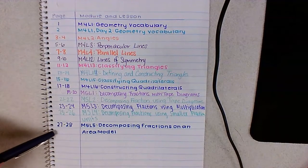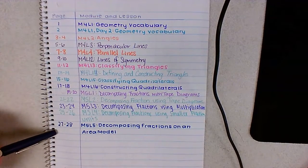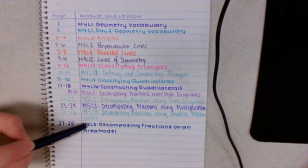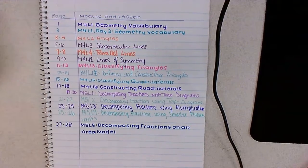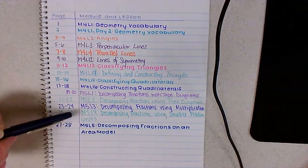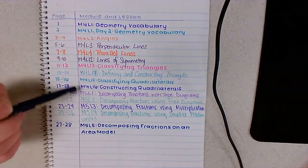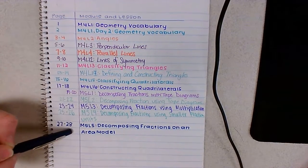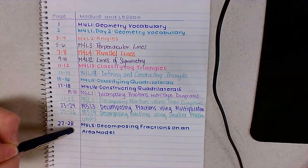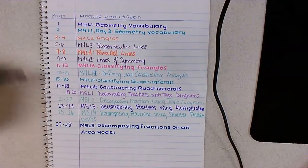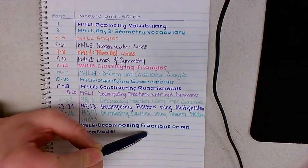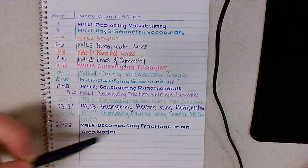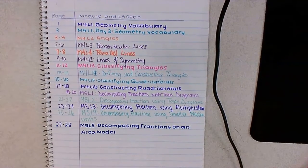Hey fourth grade! Today we're doing two pages and our lesson is module five, lesson five. We're going to continue to decompose our fractions like we have for the past few lessons, but this time we're going to utilize a tool called an area model. So today's lesson is called Decomposing Fractions on an Area Model.